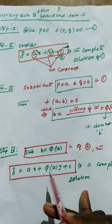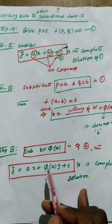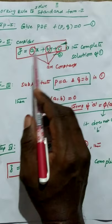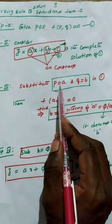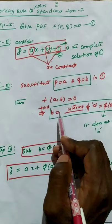Mainly in this working rule, you must remember these two key steps: consideration of z = ax + by + c as the solution, and substituting p = a and q = b in equation 1. From that, we find the value of b. Now we move to the problem.